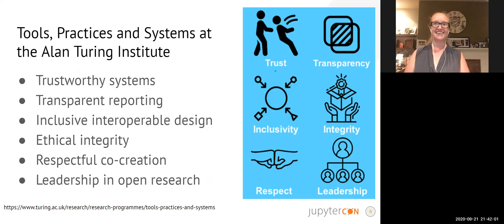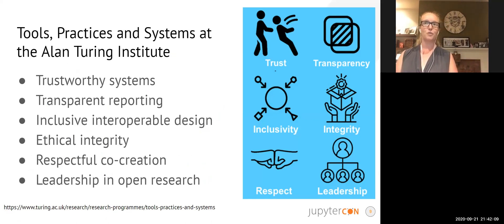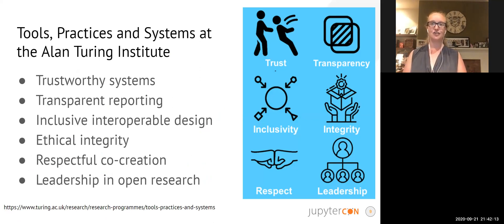On the right hand side here are some of the Turing's rules of the game — our interpersonal values that everyone in our community is expected to follow. We want to trust each other, to be transparent in our decision making, to be inclusive, behave with integrity, to respect each other, and to show leadership in our respective communities as we display these values.